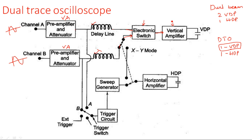The output of the electronic switch passes through a vertical amplifier — the second stage, which is the main amplifier, also known as the BJT amplifier. The entire vertical amplifier section is divided into two parts: the FET input amplifier connected before the delay line, and the main BJT amplifier connected after the delay line. The output of the main amplifier is then connected to the vertical deflection plates.